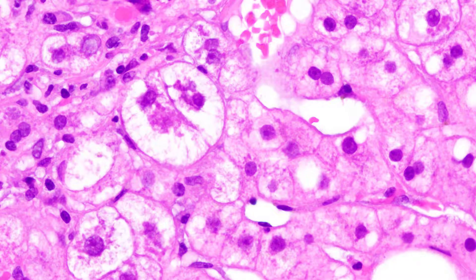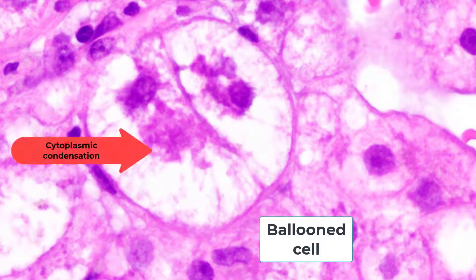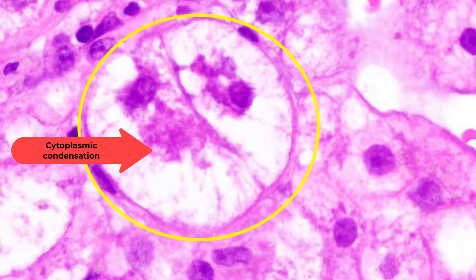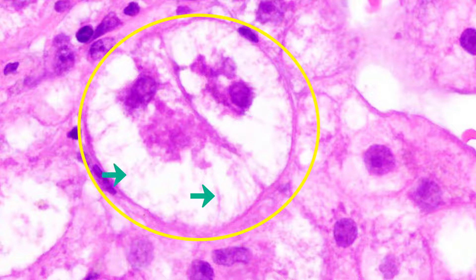Here's another balloon cell. It's clearly enlarged and has that cytoplasmic condensation around the nucleus. But many of these balloon cells also have spider-like processes extending from that condensation to the cytoplasmic membrane. A classic balloon cell, ladies and gentlemen — very, very classic.